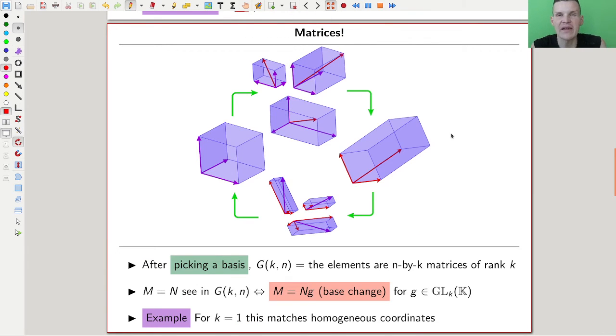How can we think about the Grassmannian? If you have the picture of base change in mind, different coordinate systems, if you pick a basis, then you can identify the elements of the Grassmannian by n by k matrices, because these are planes in that space of rank k. Rank k forces them to be those k-planes.